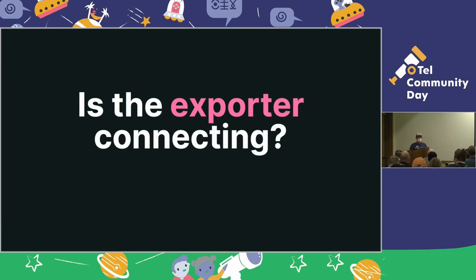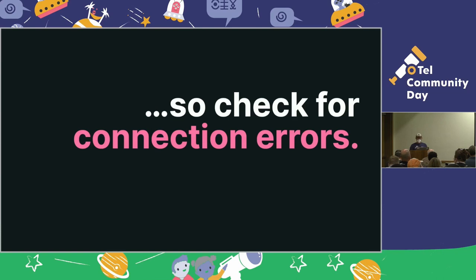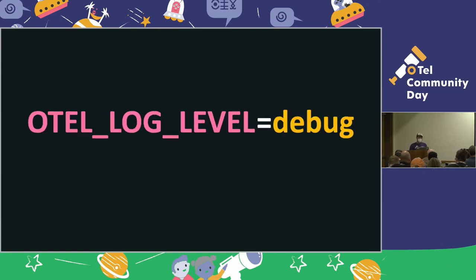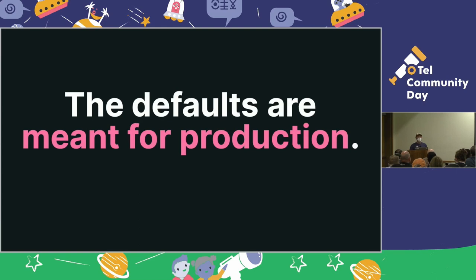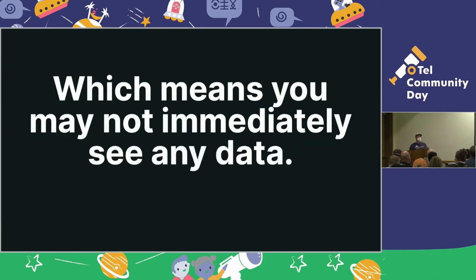Starting with: is the exporter connecting to anything? This is usually the first place people look. It might be misconfigured; you can find connection errors. OTEL_LOG_LEVEL=debug is your friend — that's pretty simple. Next up is buffering, which confuses the heck out of everybody, because the default configuration is meant for production, which means your data is going to buffer for some time before it gets flushed. You might not immediately see data if you're just running your app in developer mode and clicking on things a couple of times wondering if it's working.